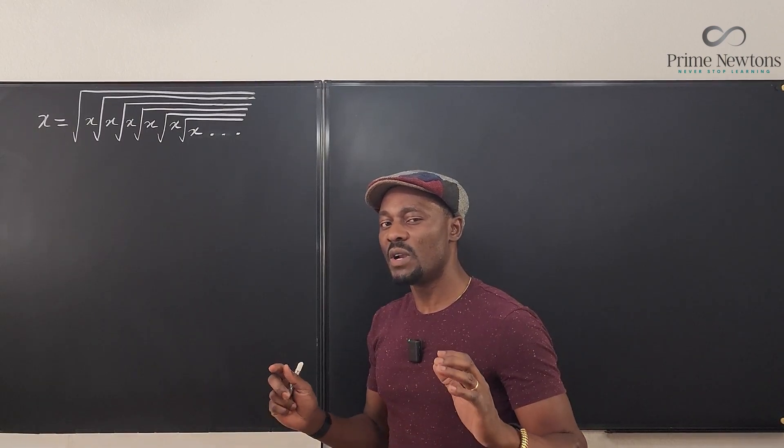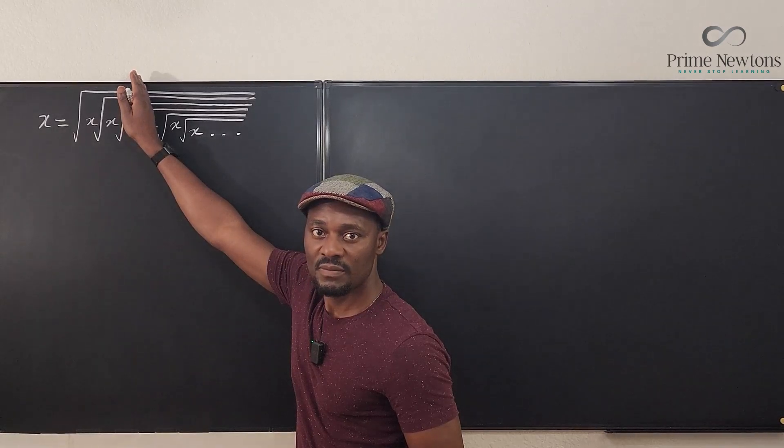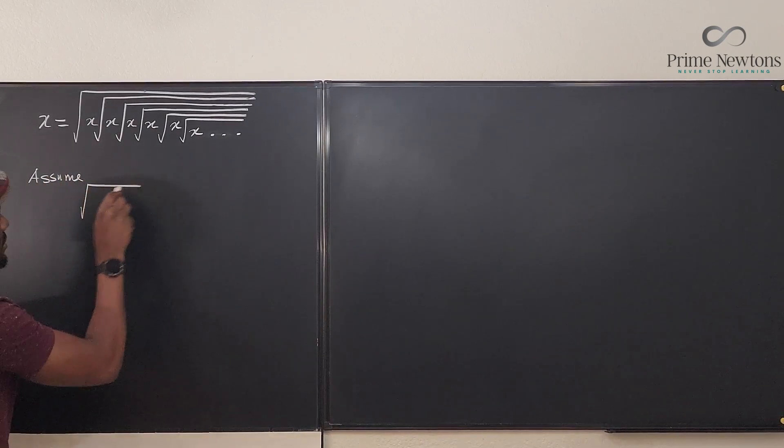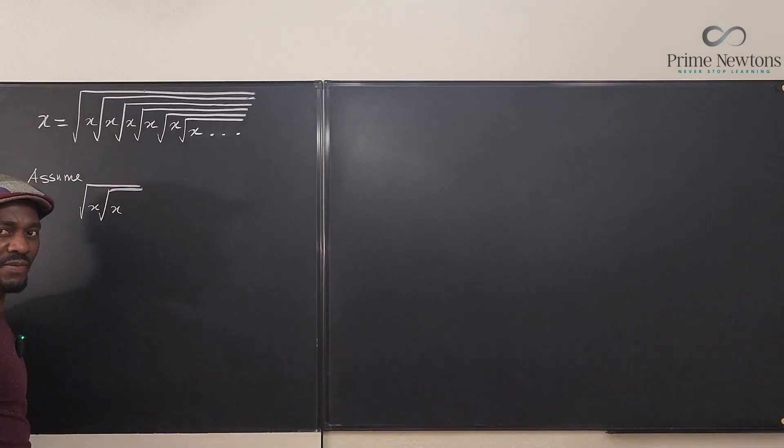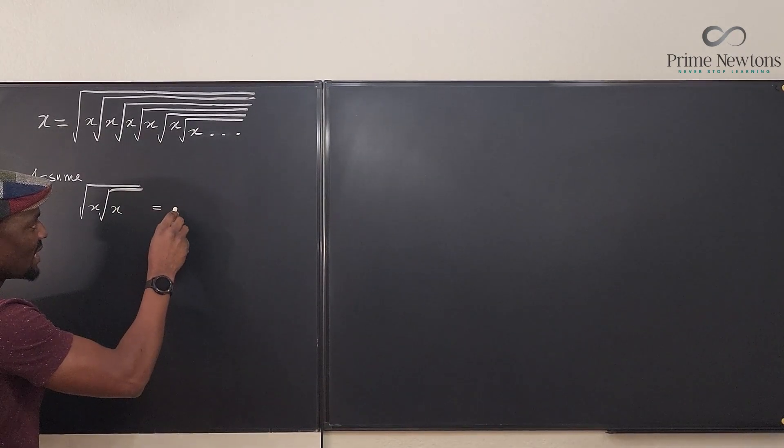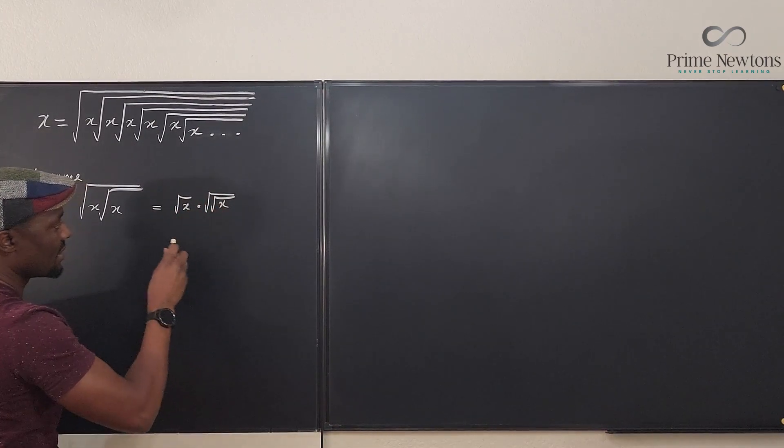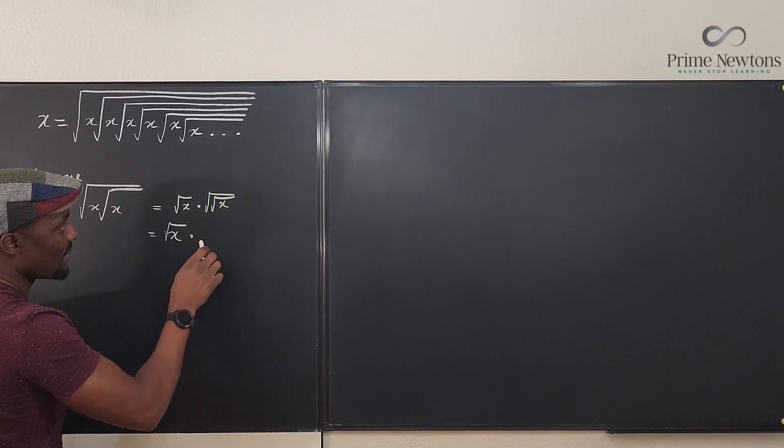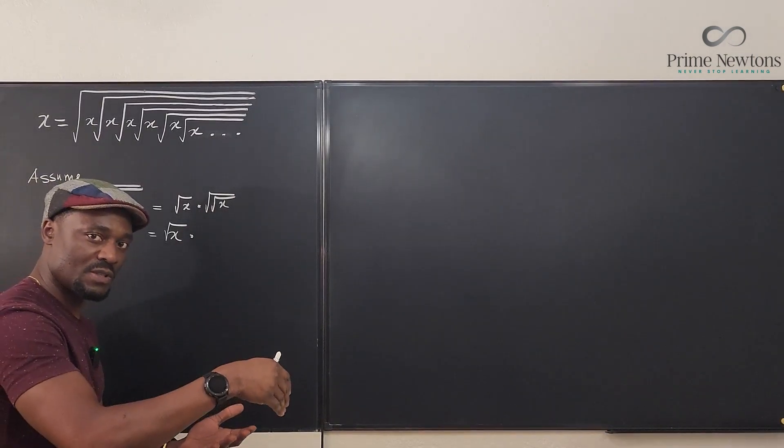Just to give you a good picture of what I'm saying, let's assume we stopped here. So let's say we have the square root of x times the square root of x—let's say it's just two terms. This can be written as the square root of x times the square root of the square root of x. This would be the square root of x times the fourth root of x, because the square root of the square root is the fourth root.